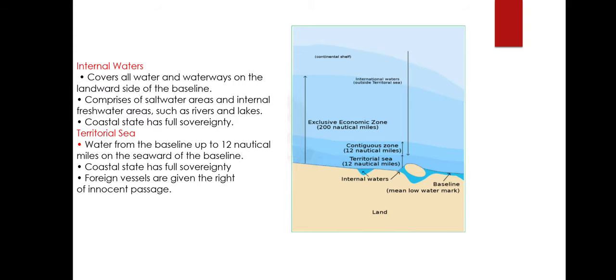UNCLOS established the International Seabed Authority and set limits for various maritime zones measured from a defined baseline. The first zone is internal waters, which covers all water and waterways on the landward side of the baseline, including saltwater areas and internal freshwater like rivers and lakes. In internal waters, coastal states have full sovereignty — free to set laws and regulate use of any resources. A crucial point is that foreign vessels have no right of passage within internal waters.